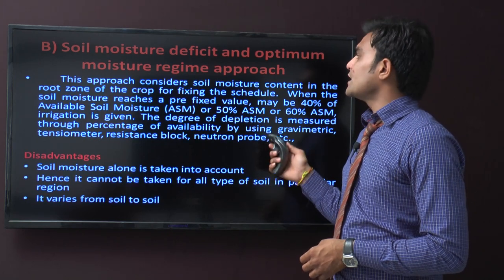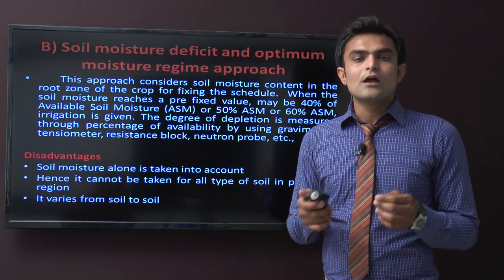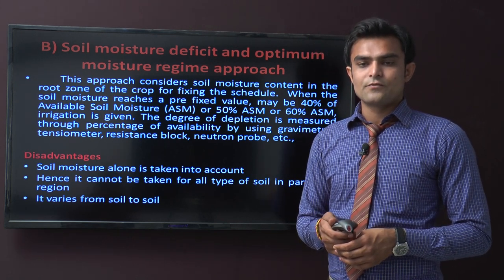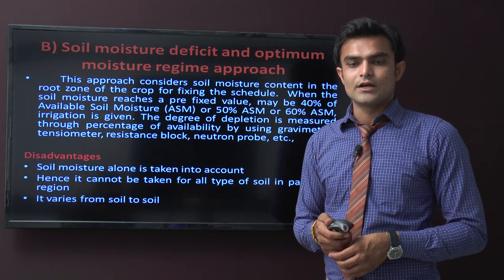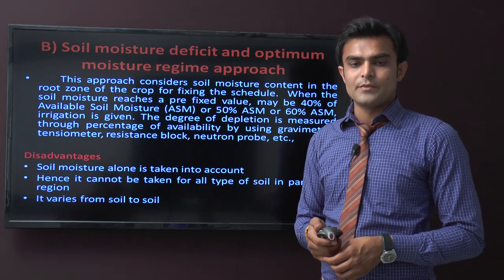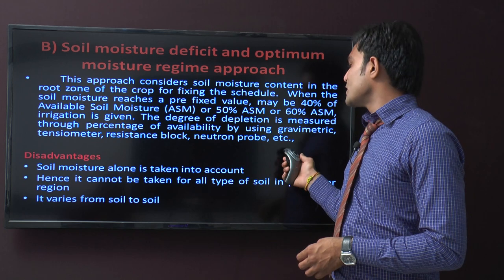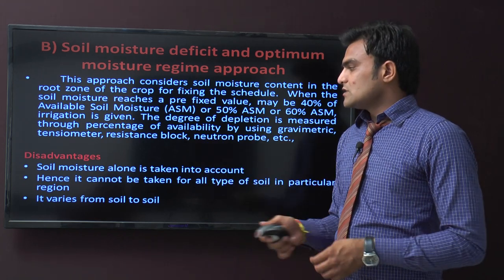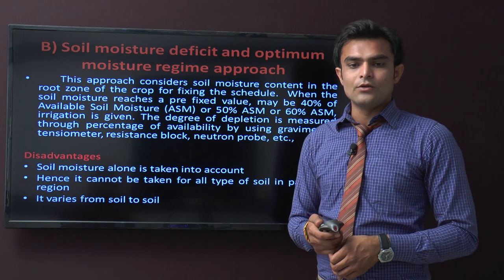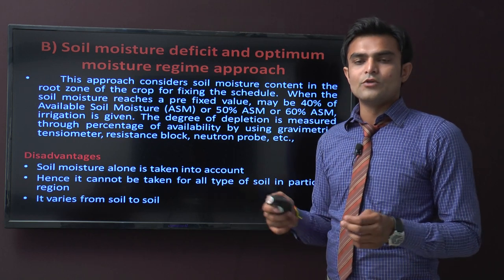The second approach is soil moisture deficit and optimum moisture regime. This considers the soil moisture content in the root zone of the crop for fixing schedules. When soil moisture reaches a fixed value — 40%, 50%, or 60% of available soil moisture — irrigation is given. The degree of depletion is measured through gravimetric, tensiometric, resistance block, neutron probe, and other systems. A disadvantage is that soil moisture alone is taken into account, so it cannot be applied universally across all soil types since different soils have different moisture deficit conditions.